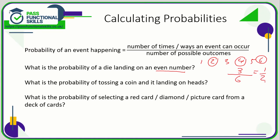So the probability is three out of six, which simplifies to one out of two. The numbers are either even or odd, and there's the same number of each, so the probability is one half. What's the probability of tossing a coin and it landing on heads? There are only two outcomes — heads or tails — and only one way to land on heads, so that's one out of two, a half.